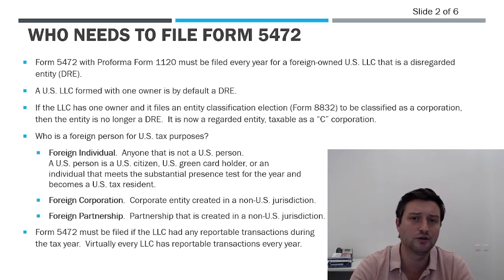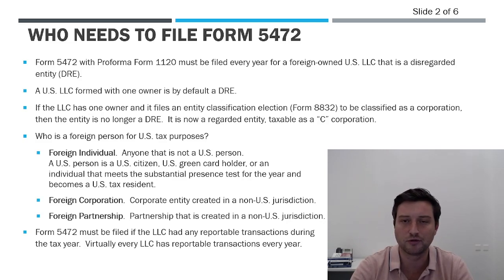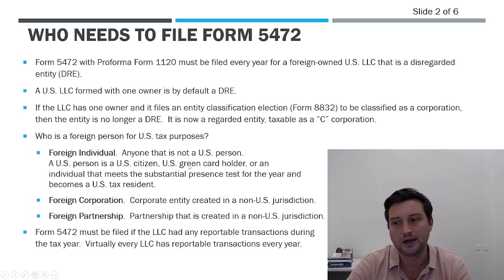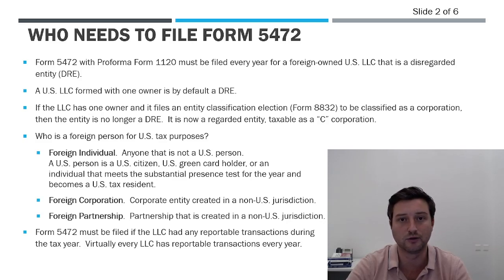Now let's talk about who's a foreign person for U.S. tax purposes. It's either a foreign individual, foreign partnership, foreign corporation, or even a foreign trust — basically anybody that's not a U.S. person. In an individual context, U.S. persons are U.S. citizens no matter where they live and work. If you have a U.S. green card, you're a U.S. person. And the third category is if you meet the substantial presence test.